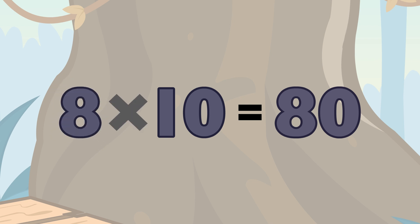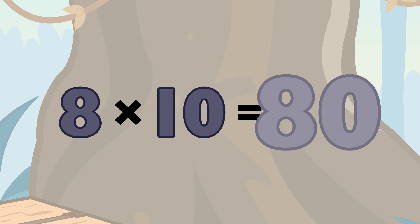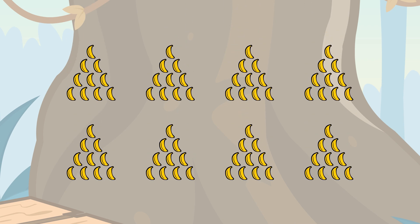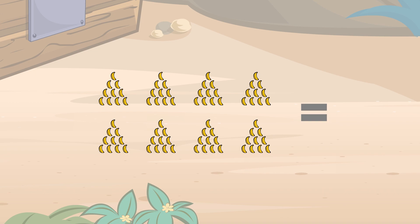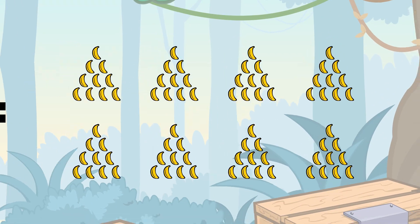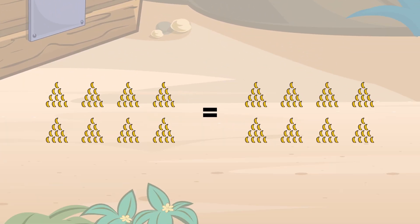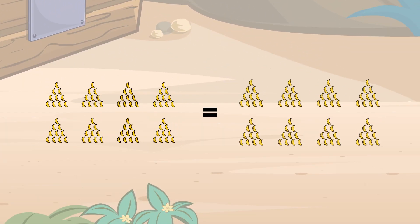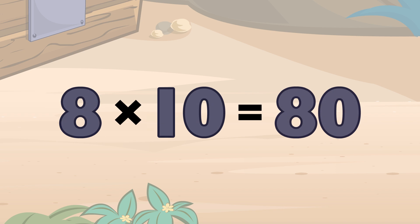Eighty. Eight times ten equals... Eighty. Twenty, thirty, forty, fifty, sixty, seventy, eighty. Eighty. 8 times 10 equals 80.